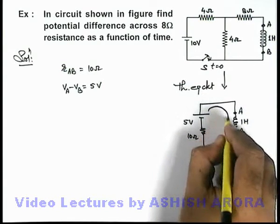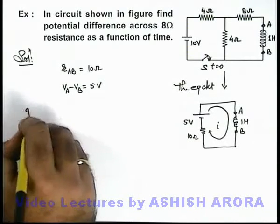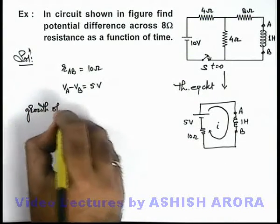Now in this simple LR circuit the growth of current can be directly written as, here we can write growth of current in inductor is,